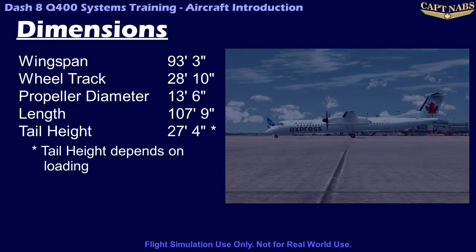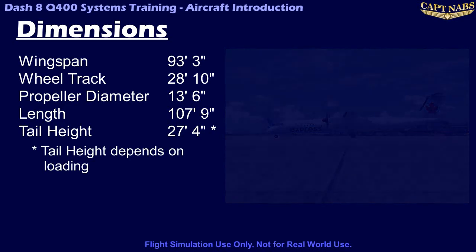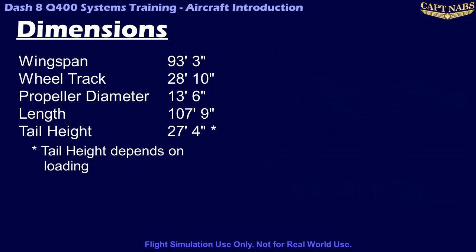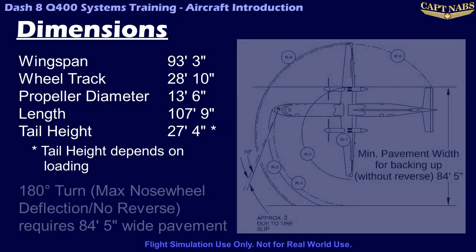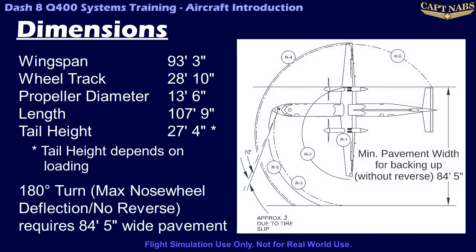One other critical dimension to be aware of is the minimum radius required for a 180 degree turn. Without using reverse, a 180 degree turn will require a paved area that is a minimum of 84 feet 5 inches wide.